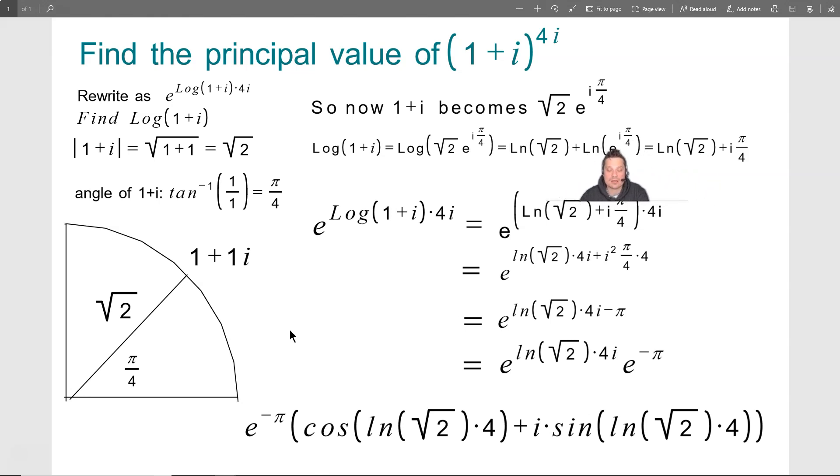But this other part right here that says ln of e to the i pi over 4, well, the ln and the e functions are inverses, so you can cross them off, which means at the end, all that would remain would be i times pi over 4. So this expression, ln of the root of 2 plus i pi over 4, that just represents log of 1 plus i.